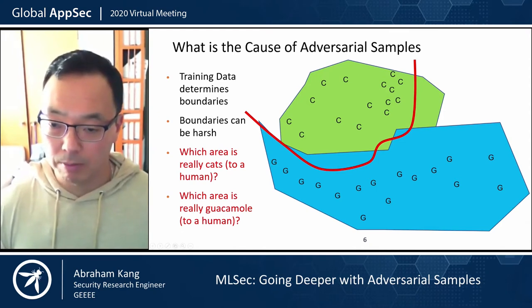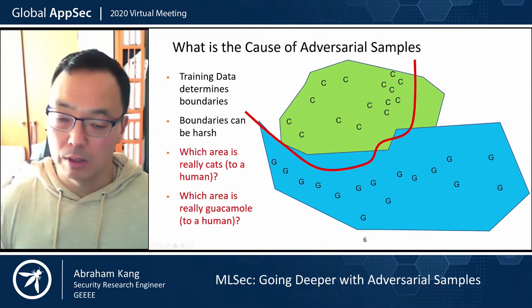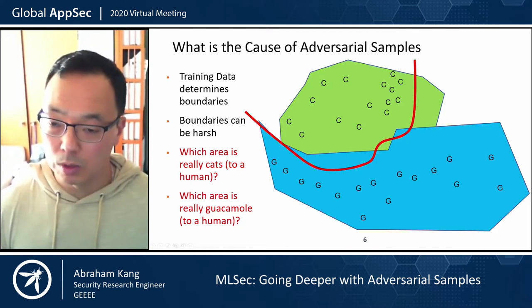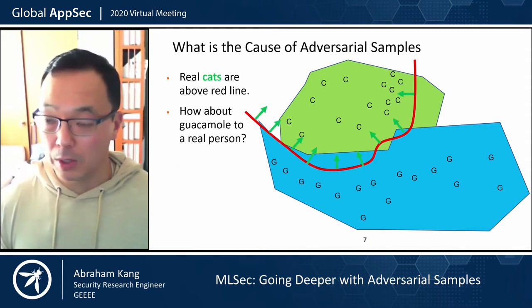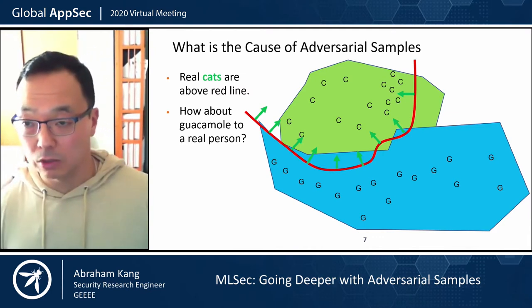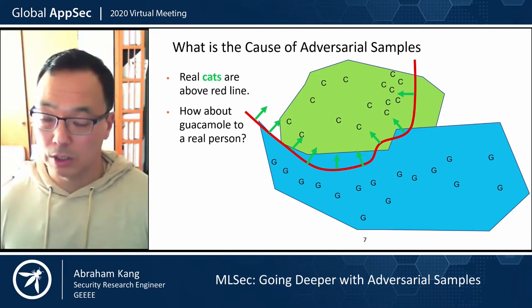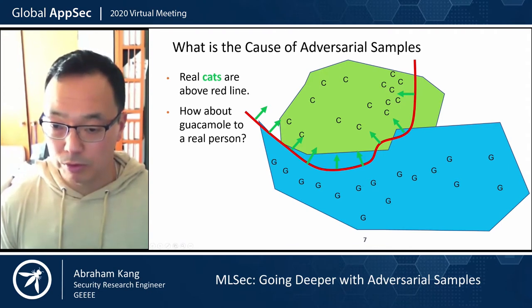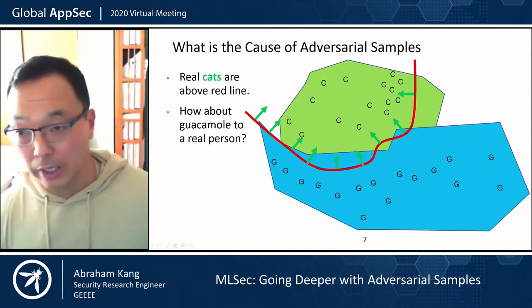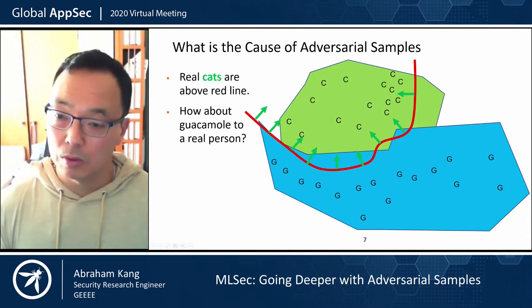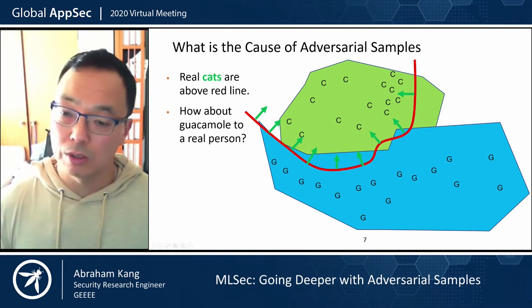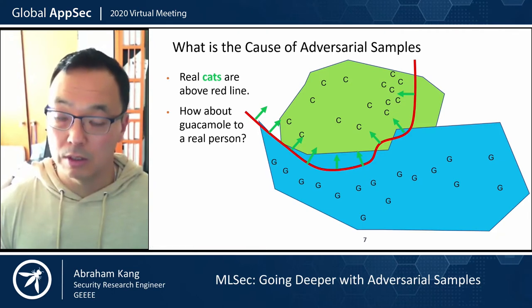If you look at the red boundary, the area above the line is what a human would categorize as a cat — even if the image is perturbed like the picture we showed. The model, however, has these blue areas where things that look like cats get categorized as guacamole. In general, we can push a cat into a blue area to be classified as guacamole, or push guacamole into a green area and have it called a cat — even though it hasn't changed its overall look. Because we've crossed the boundary, the model says it's the other thing.